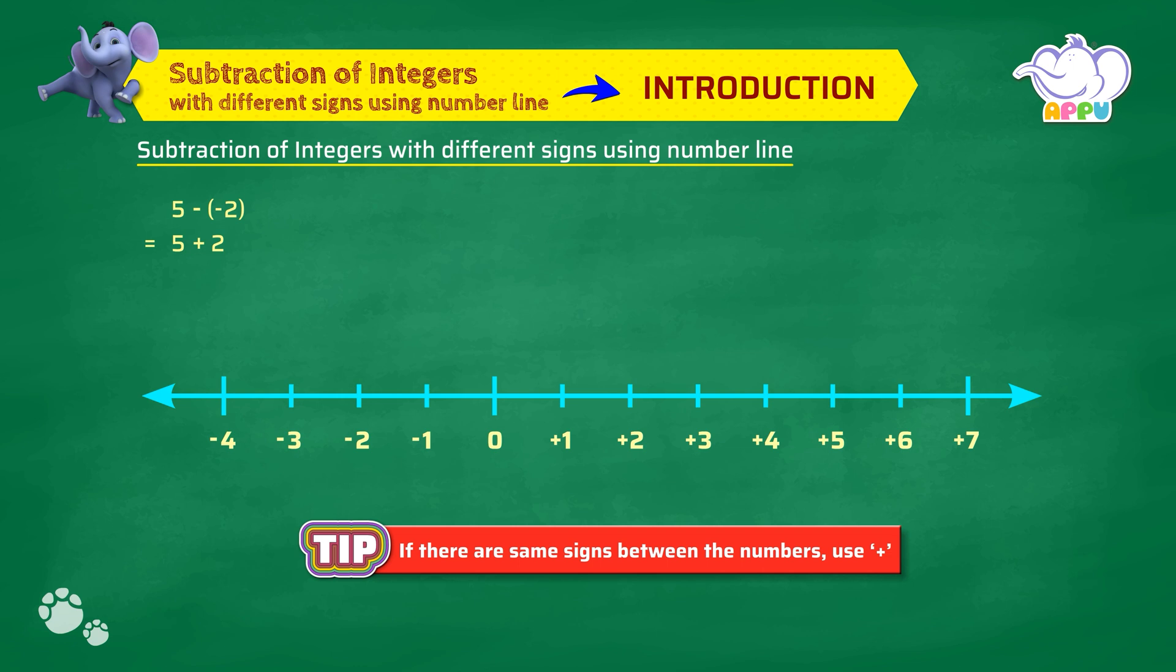We move 5 to the right to get plus 5. Then, move 2 to the right from plus 5. We reach plus 7. So, the answer is 7.